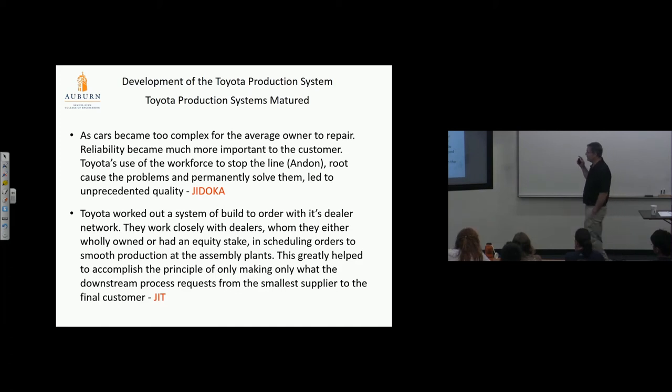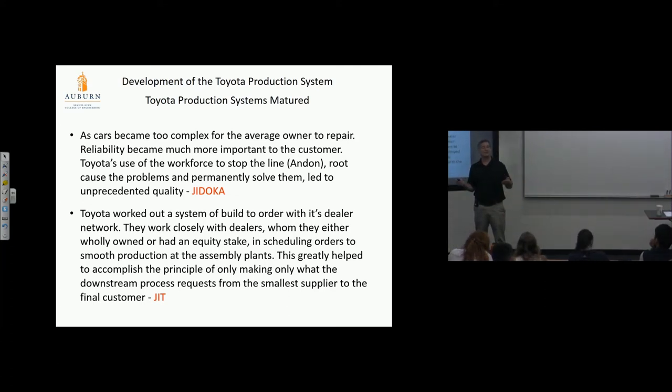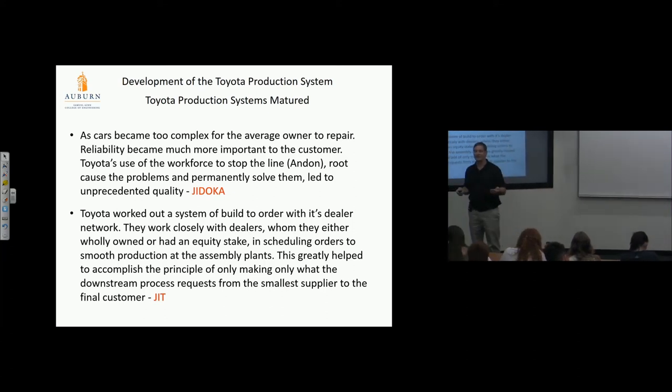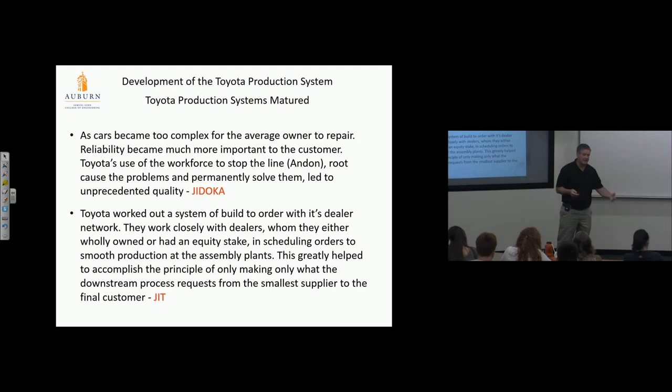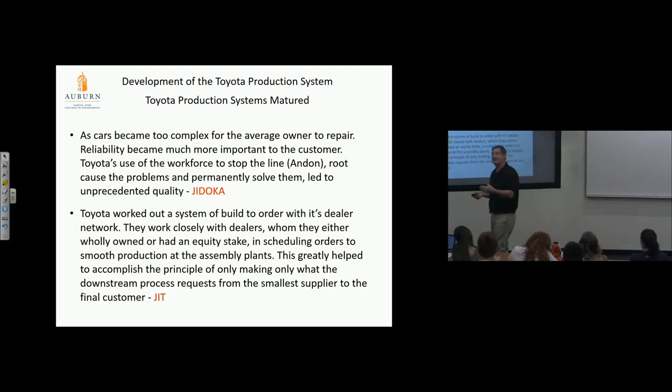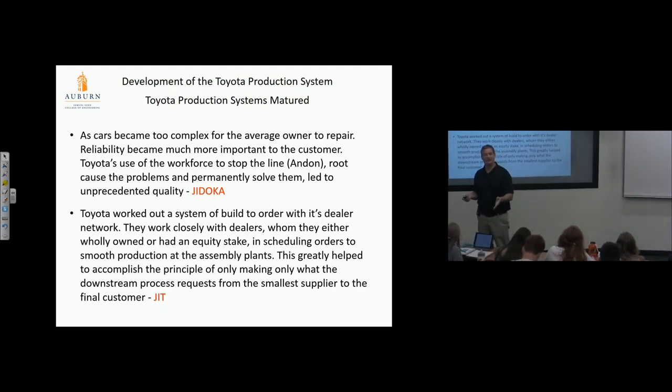Toyota worked out a system of build-to-order with its dealer network. They work closely with dealers whom they either wholly owned or had equity stake in, scheduling orders to smooth production at the assembly plants. This greatly helped accomplish the principle of making only what the downstream process requests from the smallest supplier to the final customer—leveled schedule. When you look at an assembly plant, they're building a thousand cars a day. For the next year, every day they're building a thousand cars. You think that's how demand works? No. They manage it—they have agreements with dealers to keep it at a thousand, offer incentives to sell more cars, take line shutdowns for a month to keep it at a thousand. It's critically important they don't affect the speed of the line. They have to level that schedule, then they can construct a system of just-in-time flow and flexibility.